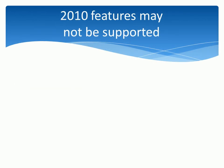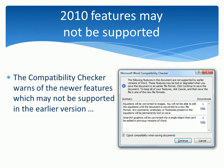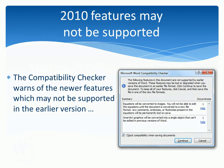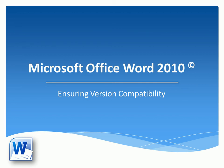You'll be glad to know that when saving files to other versions of Word, the Compatibility Checker will warn you of any newer features used in your document, which may not be supported in the earlier version. As you can see, it's easy to work with existing documents that were created in earlier versions of Word, while being able to take advantage of Word 2010's powerful new features.